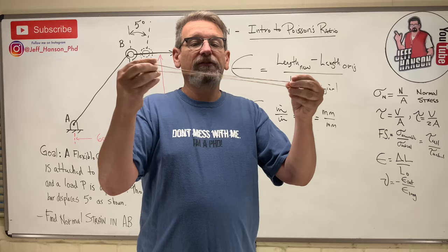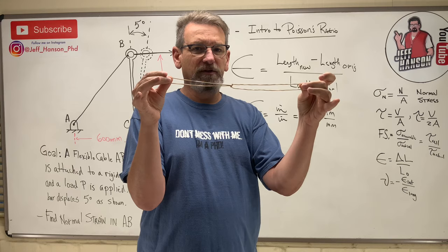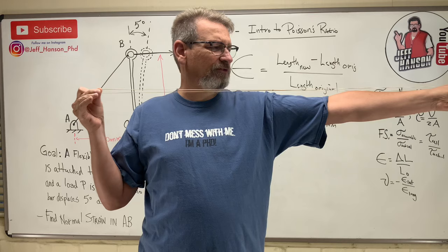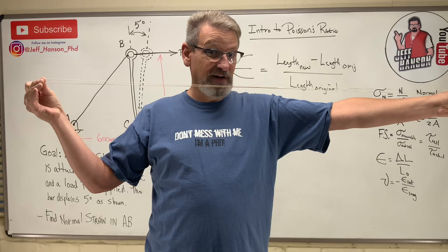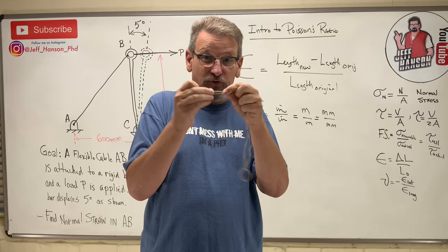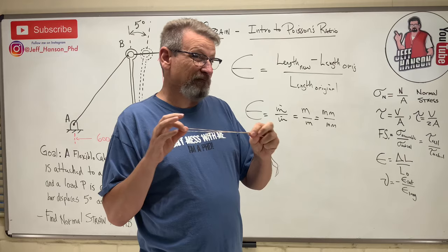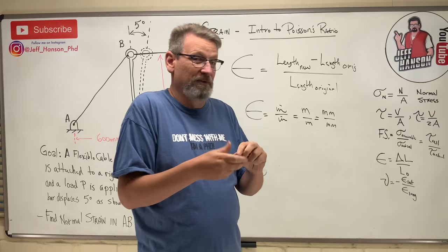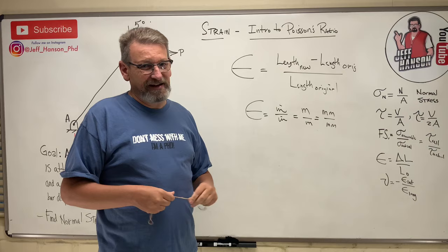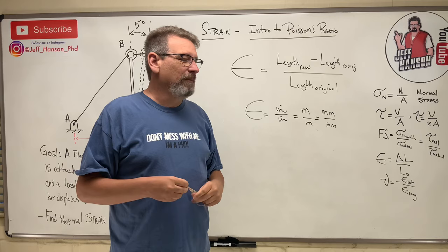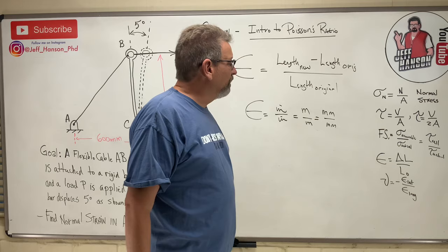If the rubber band is twice as long — 14 inches unstretched — it can stretch to about 42 inches. The more inches of rubber band you have, the more total stretch you get. That's what inches per inch means: how many inches does it stretch for each inch of material. That is deformation — that is strain. And this of course is axial strain; there are other kinds of strain, but most of the deformation we'll deal with is axial.